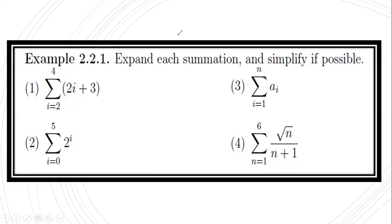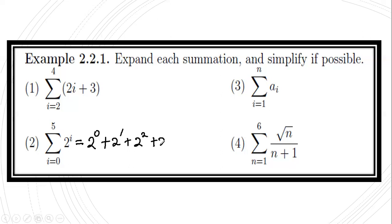The next given is the summation of 2^i where i ranges from 0 to 5. The first term is when i = 0, so 2^0. Then i = 1 gives 2^1, then 2^2, 2^3, 2^4, and finally 2^5.